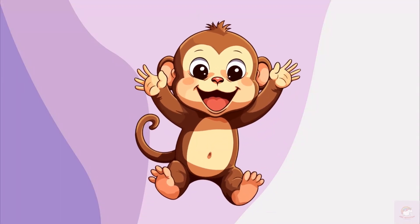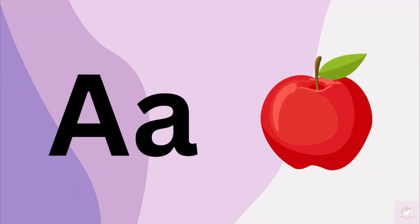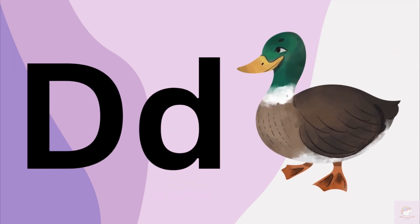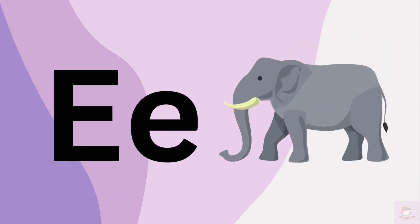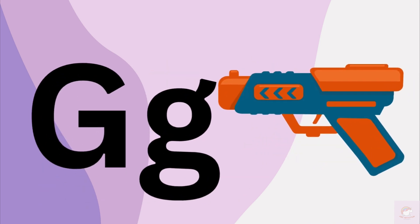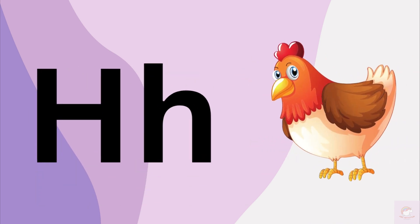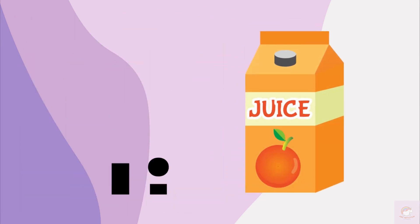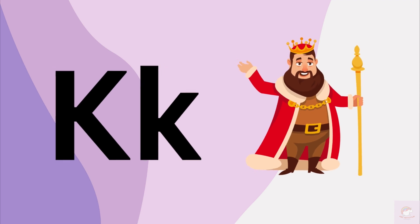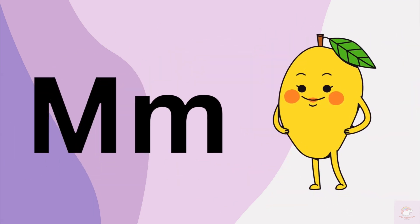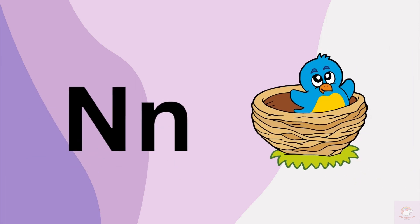Let's sing the ABC songs. D for dog, E for elephant, F for frog, G for gun, H for hen, I for ice cream, J for juice, K for king, L for lamp, M for mango, N for nest.